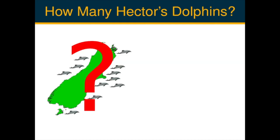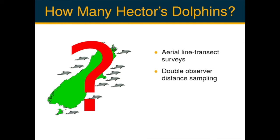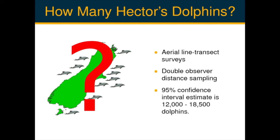Now let's finish by returning to the Hector's dolphin example. We were part of a team that conducted aerial surveys for these dolphins between 2010 and 2016 and estimated their abundance using double observer distance sampling. We were responsible for much of the overall design in terms of determining how much survey effort was required, and analysed all the data. Our final 95% confidence interval estimate was that the number of dolphins around the South Island was 12,000 to 18,500 individuals, which turned out to be substantially larger than previous estimates. The important thing to note is that it is the interval itself which is our estimate of how many dolphins there were.